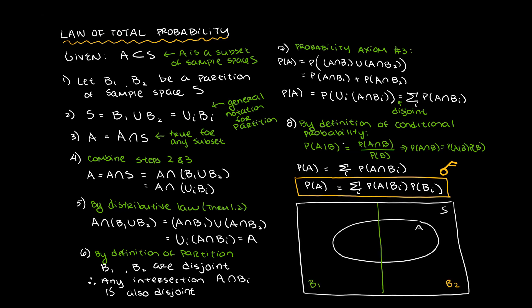Here is a visual of how the LTP works. Do you see how the event A overlaps with both B1 and B2? And the parts that overlap with B1 and B2 do not overlap with one another. Well therefore, A becomes a sum of A intersect B1 and A intersect B2.